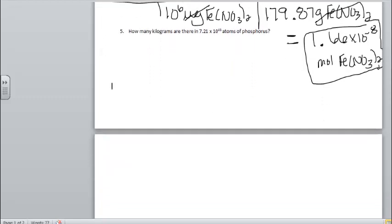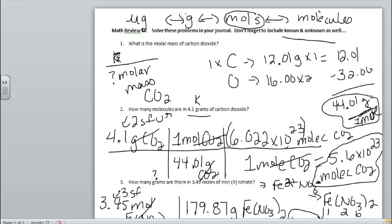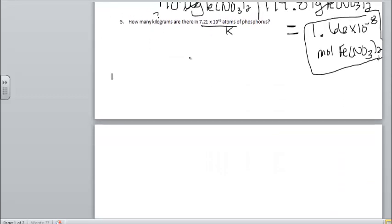Last but not least, we've got a multi-stepper. And what we're going to end up doing here, we have to go atoms to kilograms. So here's my known, and I have to go to kilograms. So if I come back up to my chart here for just a second, I'm going to have to go atoms or molecules. I'm going to go atoms to moles first, then moles to grams, and then grams, this time we're going to kilograms.